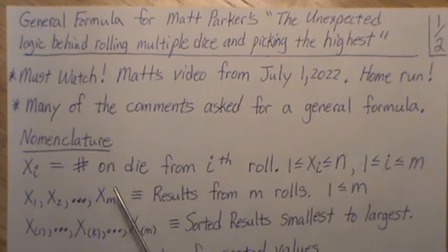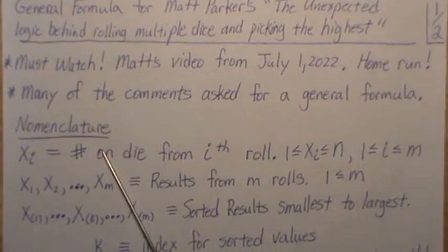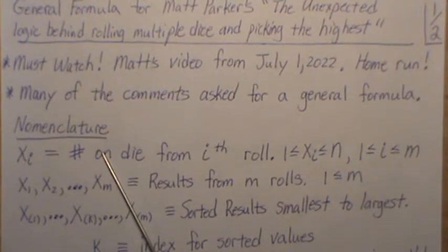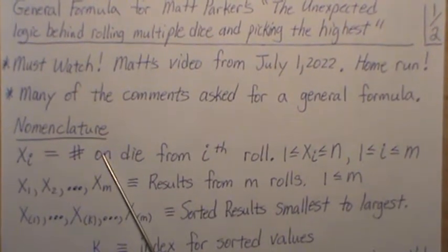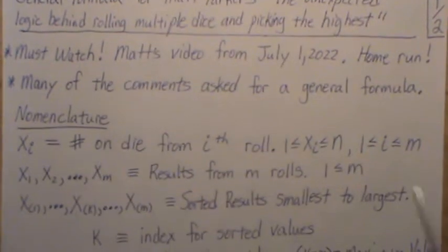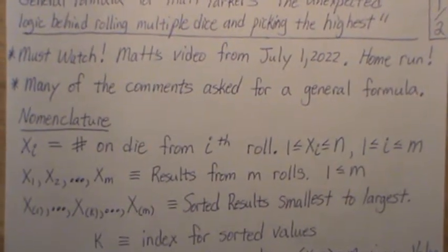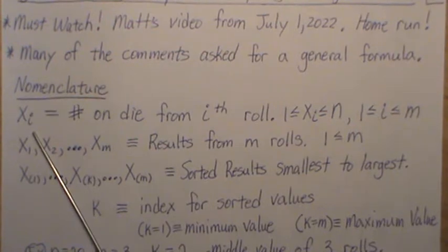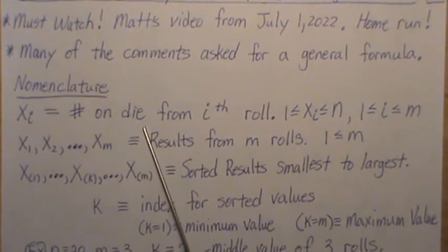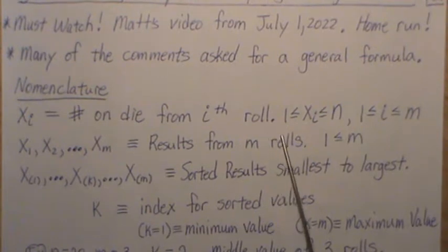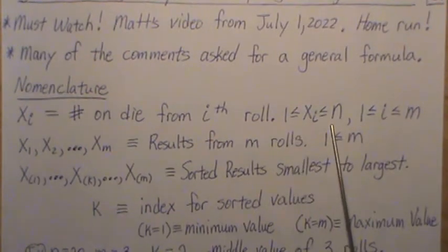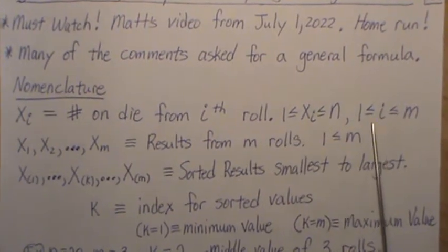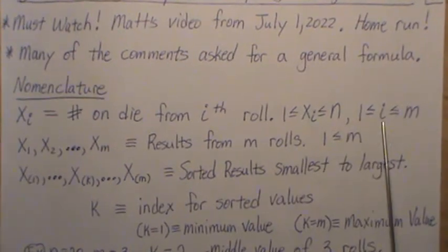But before we jump into it, whenever you do something in generality, it can be pretty complex. So you need to develop some nomenclature around the problem to make sure that we're all talking about the same thing. So we let xi be a random variable and it's the number on the die from the ith roll. And the number can be anywhere from 1 to n and the index goes from 1 to m.